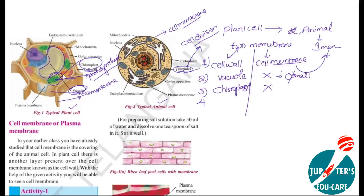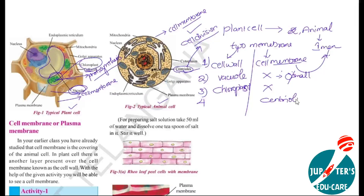These centrioles appear at the time of cell division in plants. When the plant needs division, at that time centrioles appear in the plant cell. But in animal cell, irrespective of cell division, throughout its life, centrioles are always present.